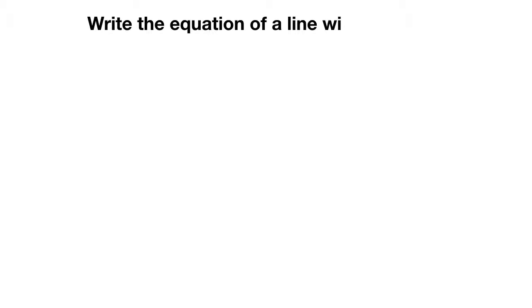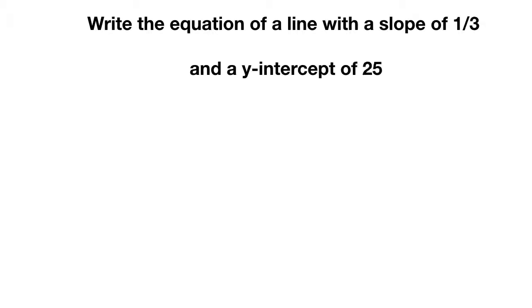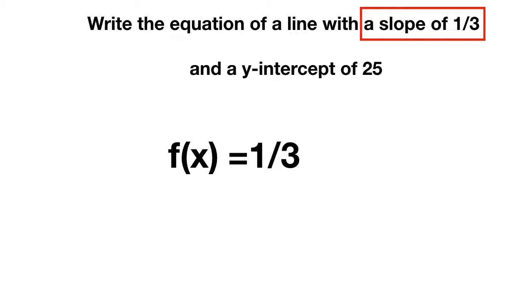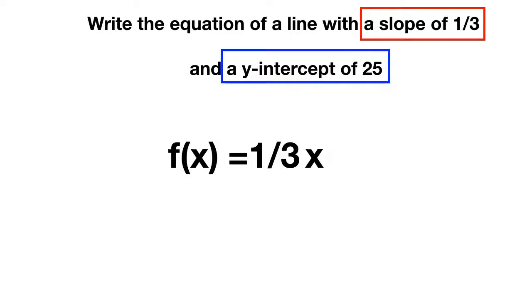Let's look at one more. You're asked to write the equation of a line with a slope of 1 third and a y-intercept of 25. We'll write f of x is equal to — the slope is 1 third, so we'll write 1 third x. The y-intercept is 25, so 1 third x plus 25.